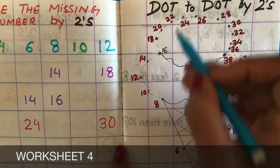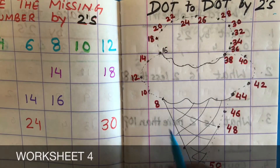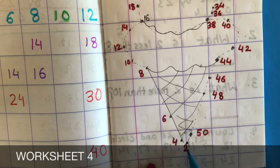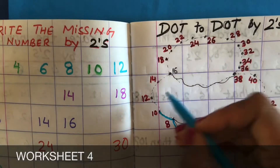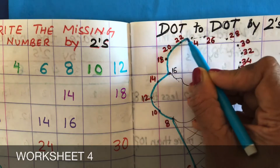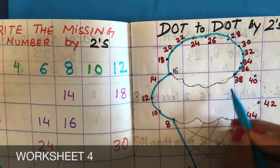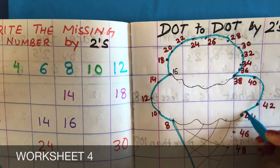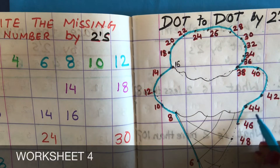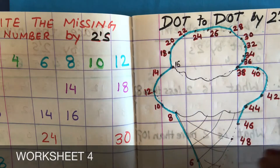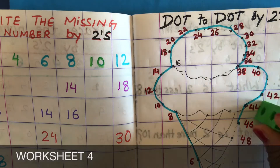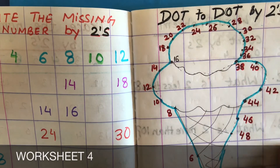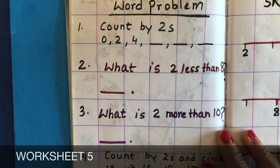This is an interesting worksheet the kids will like — dot-to-dot by twos. All the numbers are written by twos, so they start from two and start connecting: four, six, eight, ten, twelve, fourteen, sixteen. In this way they connect all the twos and read them aloud. Like after 44 there is not 45 but 46 — they are adding two each time. If they don't understand, bring the cubes and show them 44, 45, 46.